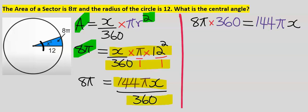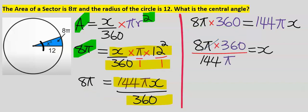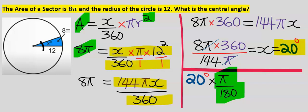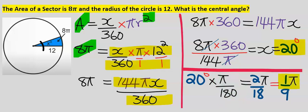Cross-multiplying, 360 moves to multiply 8π. Then π cancels. Simplifying further, the central angle is 20 degrees. To express 20 degrees in radians, multiply by π/180, giving 1/9 π — so 1/9 π radians is the same as 20 degrees.